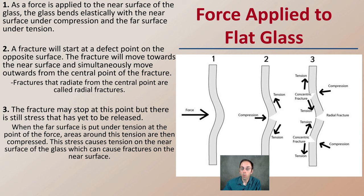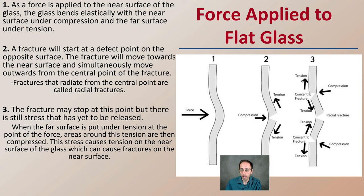The fracture may stop at this point, but there is still stress yet to be released when force is being applied. When the far surface is put under tension at the point of force, areas around this tension are then compressed. This stress causes tension on or near the surface of the glass, which can cause fractures on the near surface. As we can see in picture three, this compression and tension, combined with the bending, creates high-stress points — these weak points developing within the piece of glass — and over a larger area, a pattern begins to develop.